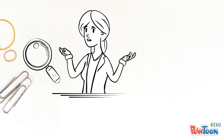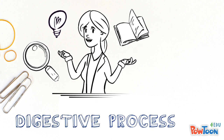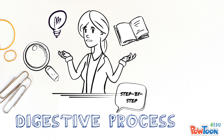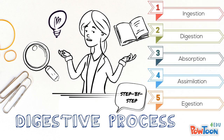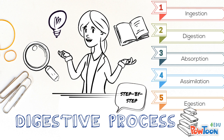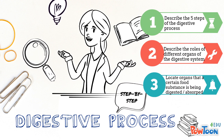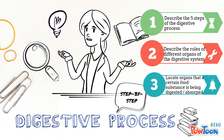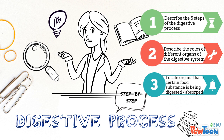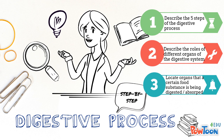We're going to go through the digestive process step by step together in this video, seeing how different organs in the digestive system work together to finish the process effectively and efficiently. By the end of the video, you should be able to describe all five stages of the digestive process, the roles of different organs involved, and locate which food substances — like carbohydrates, proteins, and fats — are being digested and absorbed in which organ.